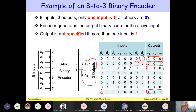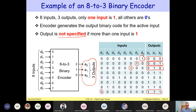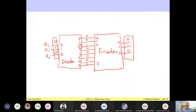One problem with the binary encoder is that it will not work properly if you have more than one input equal to one. If you have more than one input is one, the output is not specified and will typically be wrong. So you must have exactly one of the inputs equal to one. Why do we need a binary encoder? It can be useful in some problems, but let us first have a good understanding of the encoder.